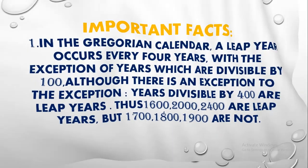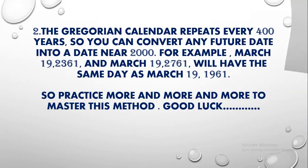Point two: the Gregorian calendar repeats every 400 years, so you can convert any future date into a date near 2000. For example, March 19, 2361 will have the same day as March 19, 1961.